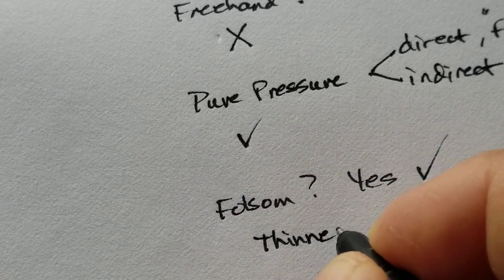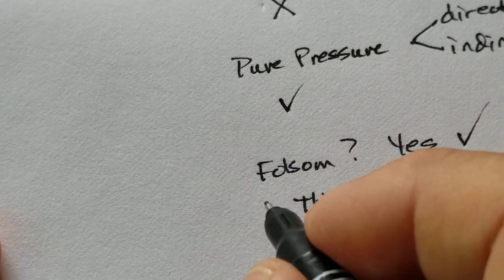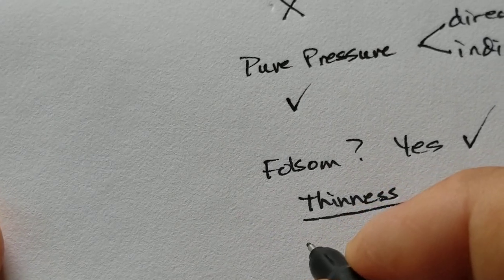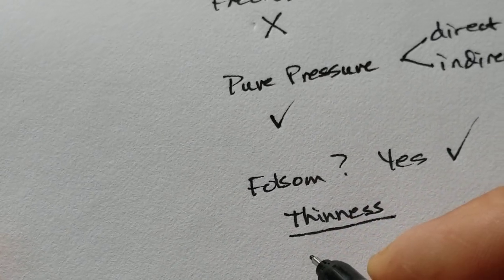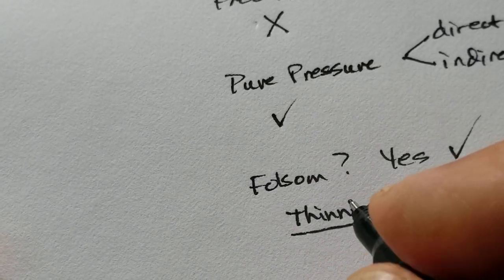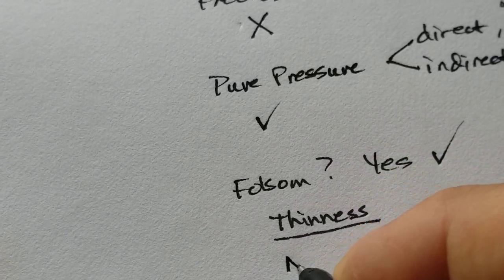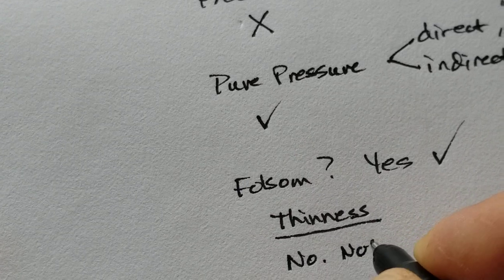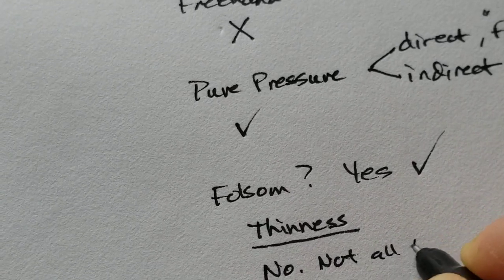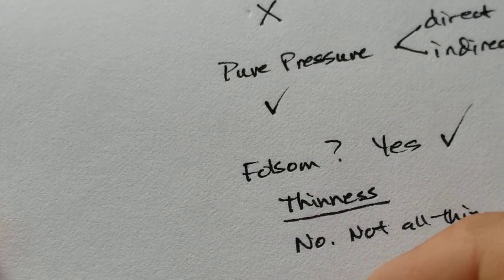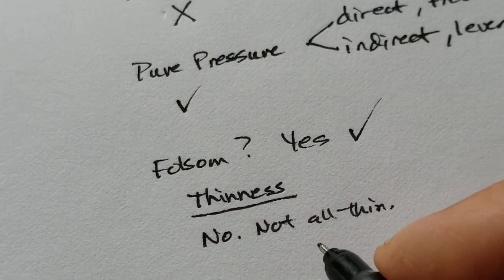Folsom is extremely thin. Cumberland is not. Okay, now are all Folsom thin? Are all of them thin? No, not all thin. Are all Cumberlands thick? No, not all Cumberlands are thick.